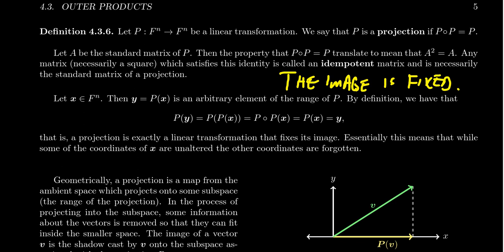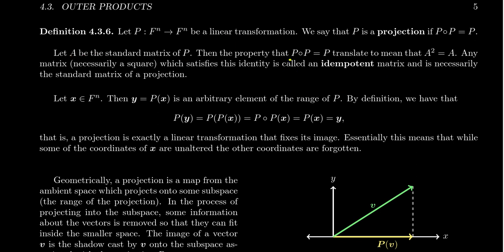Now if a projection is a linear transformation it should be represented by a matrix. If A is the standard matrix of our projection p, then the condition p∘p = p means that A times A — multiplying these two matrices together — should equal A. In other words, A squared is equal to A.